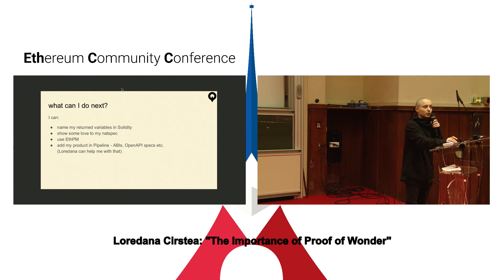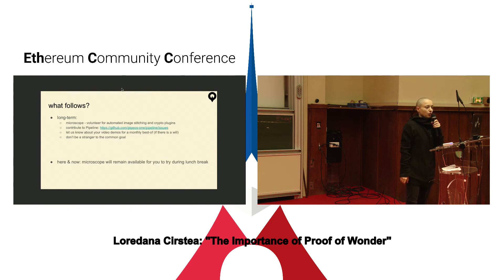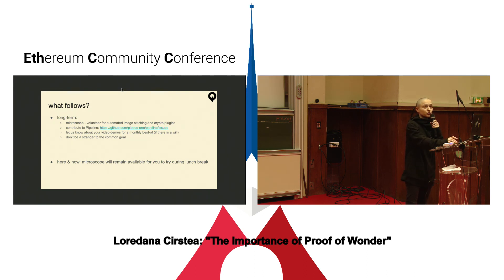Add your product to Pipeline — what's important to us is not necessarily the source code, but the APIs and open API specifications. Maybe someone wants to volunteer to do automated image stitching for the microscope, and maybe some other crypto plugins. You can contribute to Pipeline. Let us know about your video demos — we'd like to do a monthly best-of. Don't be a stranger to the common goal: if you're building something, think about other projects that might want or need to use your product, and collaborate to have general specs to which we can all contribute.